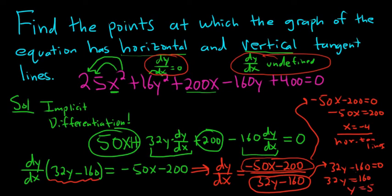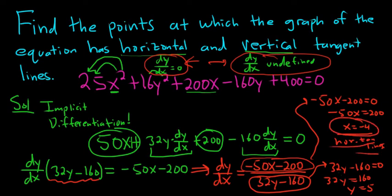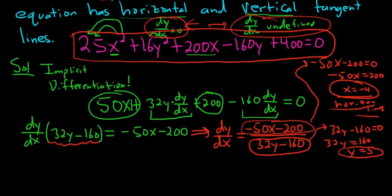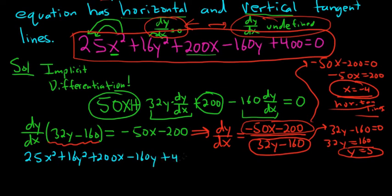To recap: we're looking for points where the equation has horizontal and vertical tangent lines. Horizontal tangent lines occur when the derivative is 0 — that's when x equals negative 4. Vertical ones occur when the derivative is undefined — that's when y equals 5. But the problem wants the actual points, so we need to go back to the original equation: 25x² + 16y² + 200x − 160y + 400 = 0.